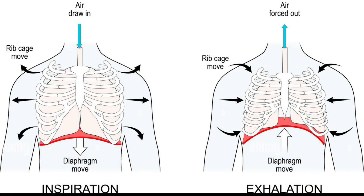Before we begin talking about performing chest decompression, we need to understand what a normal respiratory and ventilatory cycle is. During inspiration, the diaphragm pulls down and the ribcage expands, creating a negative vacuum in the thoracic cavity and lungs. This draws air in. During exhalation, the diaphragm relaxes and the ribcage contracts, creating a positive pressure forcing air out.